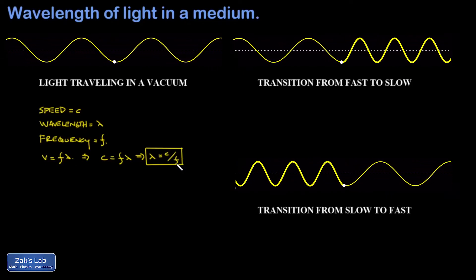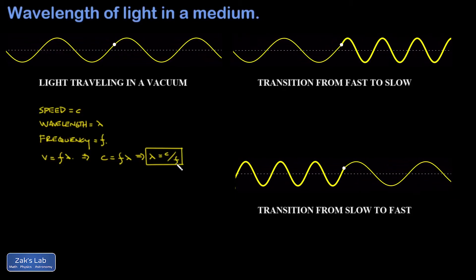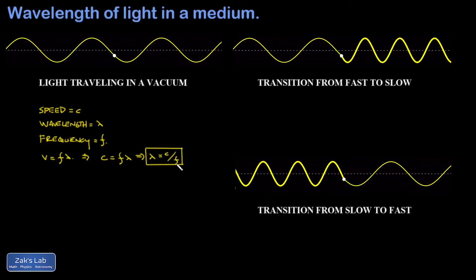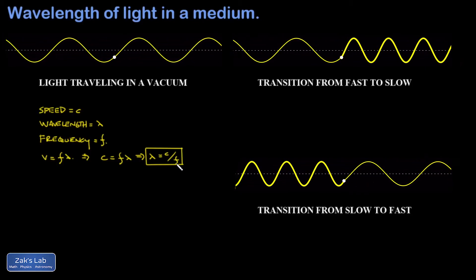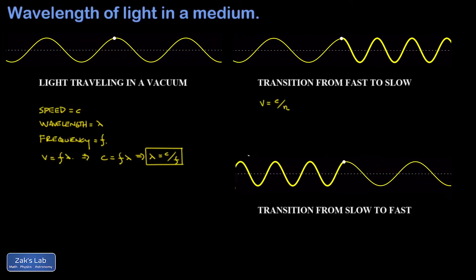First, we already know the wave will effectively slow down by a factor of N, the index of refraction. And I'll post a link to the video where this was first discussed. So the speed is reduced,